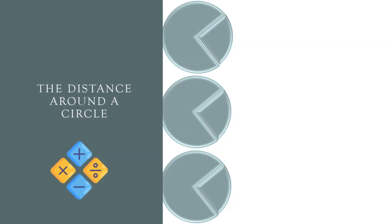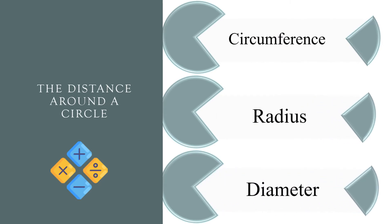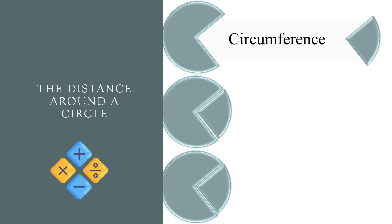The distance around a circle. Circumference, radius, or diameter? The correct answer is circumference.